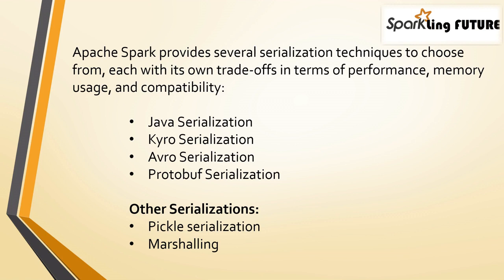Marshaling serves as a bridge between in-memory data structures and external storage or communication mediums. It allows data to be saved on disk so that it can be retrieved and reconstructed later. Data can be marshalled before being transmitted between different processors or applications, allowing them to exchange information. It is also used to make data accessible between different programming languages, preserving data values, metadata, and data type information for reconstruction.